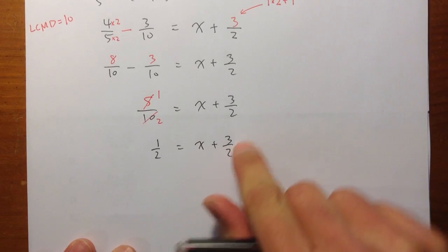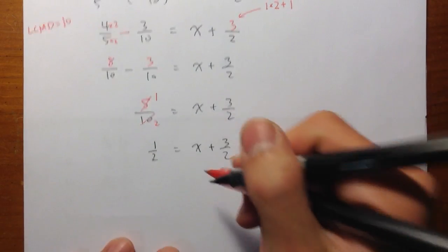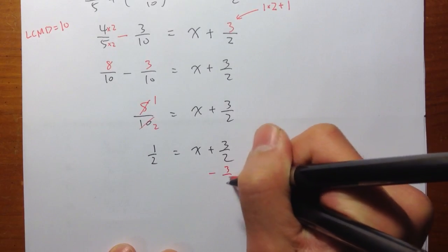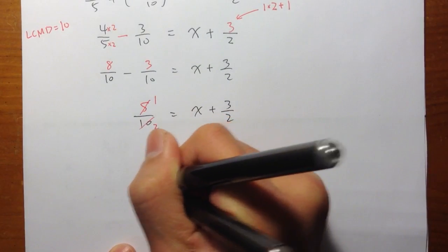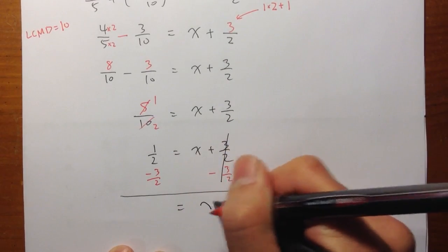So right here, x plus 3 over 2 is equal to 1 half. I need to get rid of this number, which I need to subtract 3 over 2. I need to subtract 3 over 2 on both sides. So they cancel. And I get x right here.